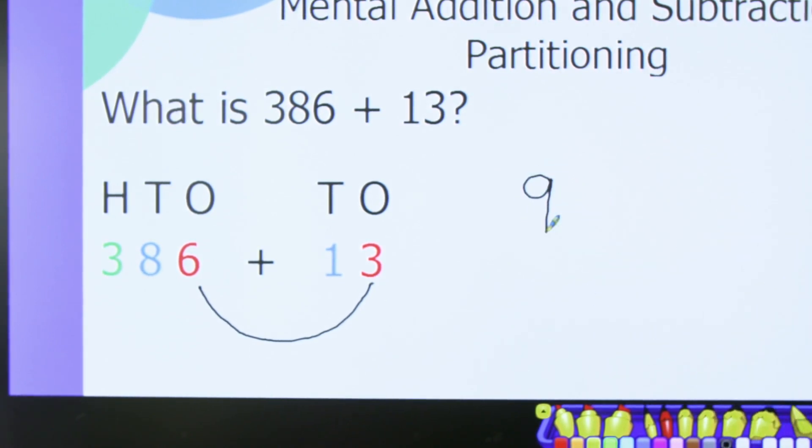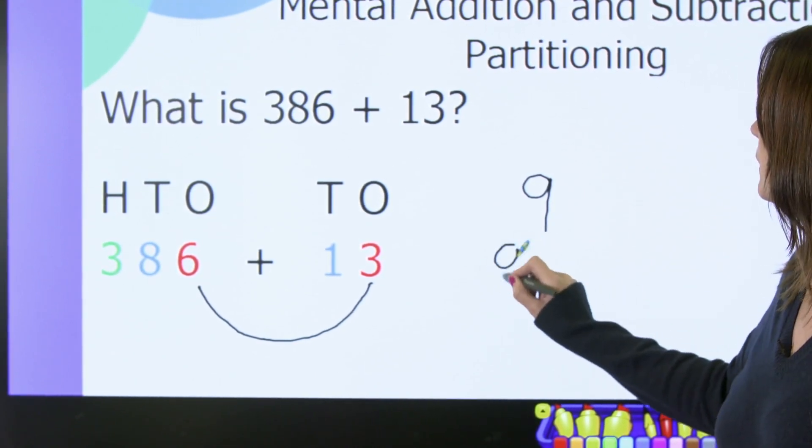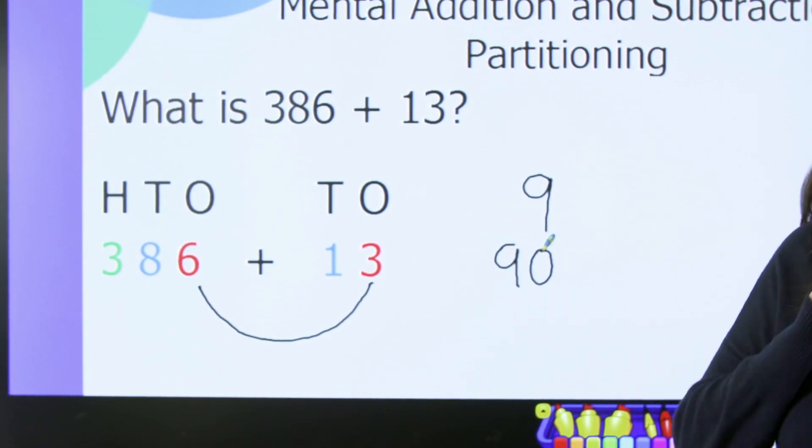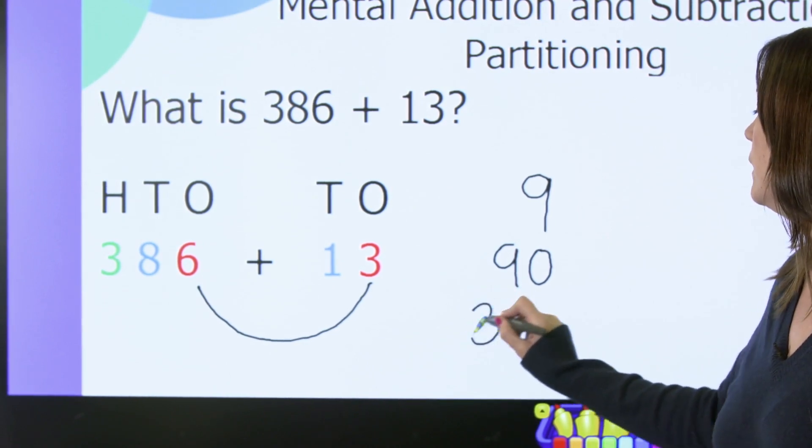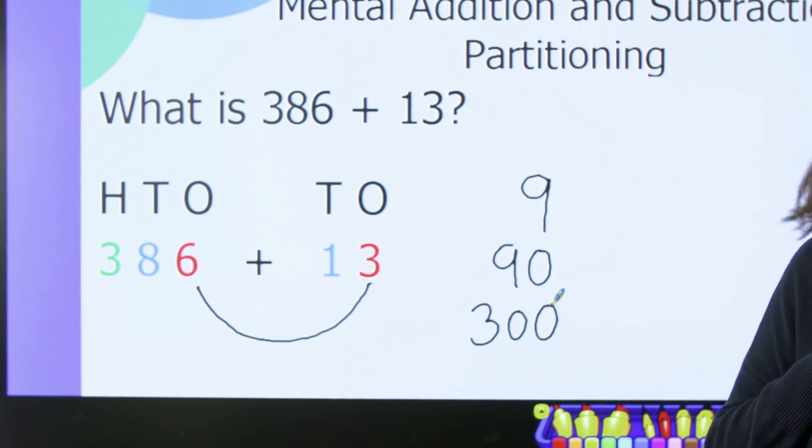Then I'm going to look at my tens. I have 80 add 10 which gives me 90, and then I have 300 and I'm not adding anything on to that so I'm just going to stick with 300. And then I can quickly and easily see that my answer is 399.